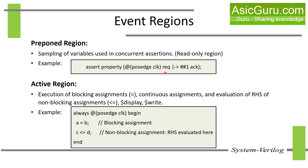Next we have the active region. This is the main region where most of the procedural code executes. It executes all module blocking assignments, continuous assignments, as well as non-blocking assignments. For non-blocking assignments, it evaluates only the RHS, and the actual update on the LHS happens in the NBA region. It also executes $display, $write, and $finish commands if they are part of the RTL design.